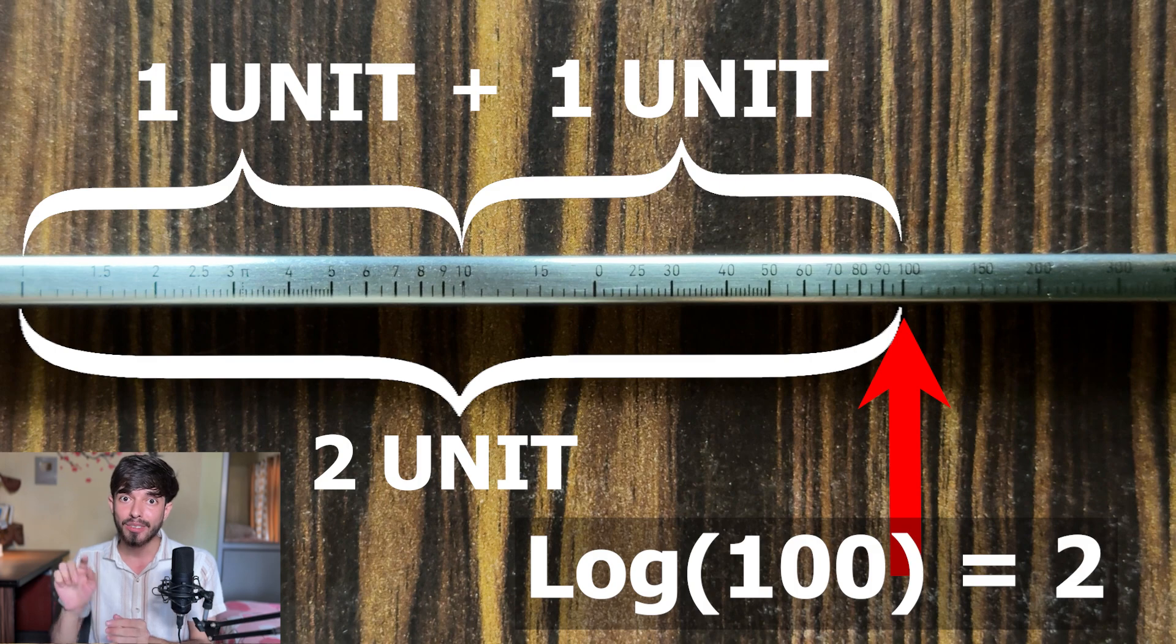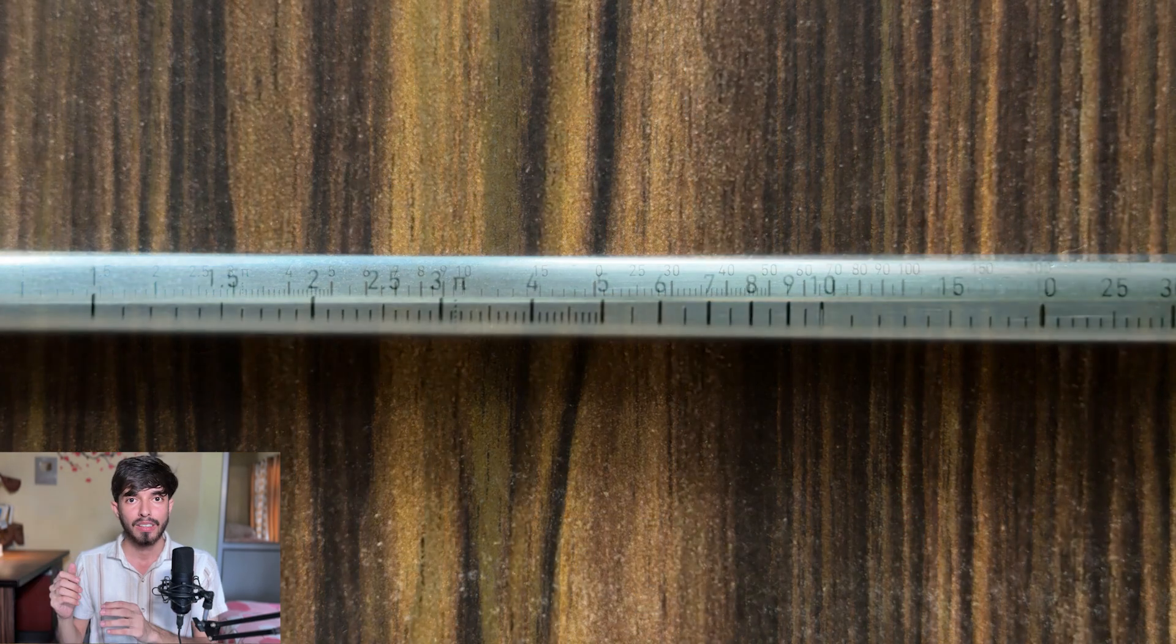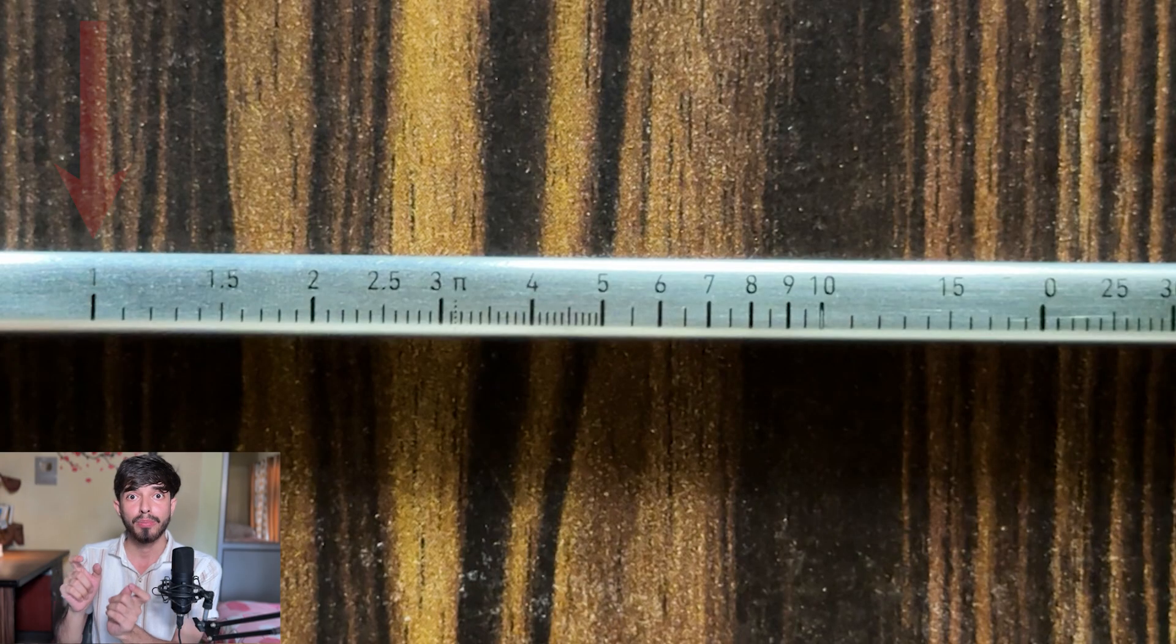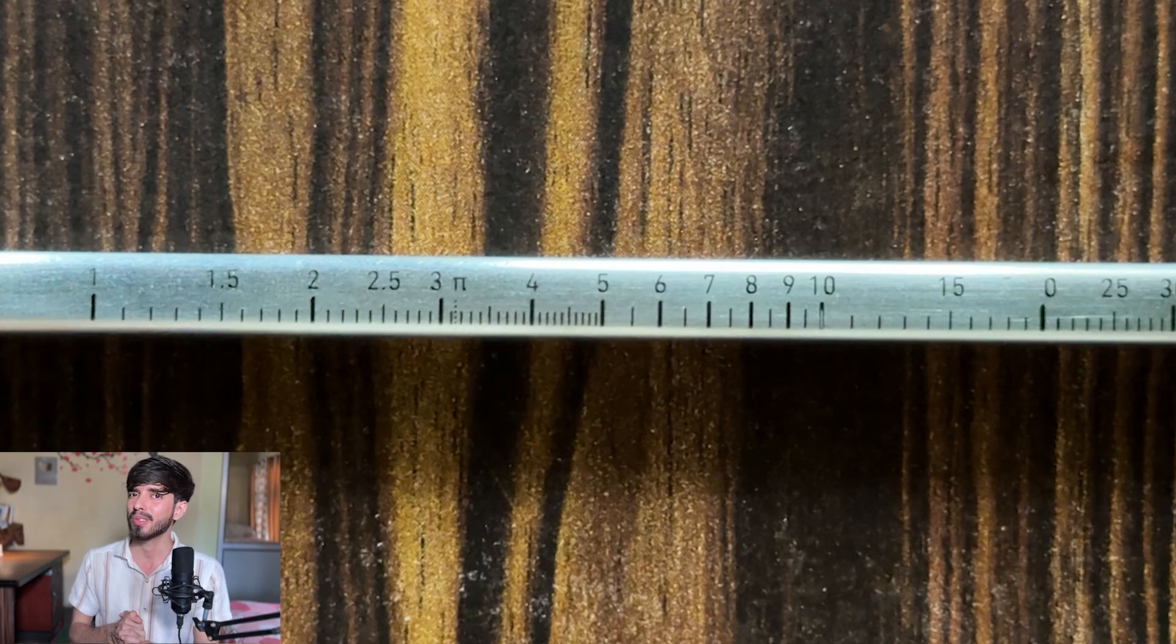Okay. So 100 would be at 2 unit length. So simply the numbers you are seeing on this scale have a distance from this one proportional to the log of that number. Now how does this help us to multiply two numbers?